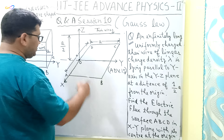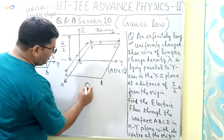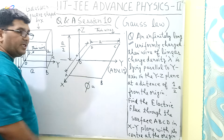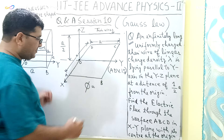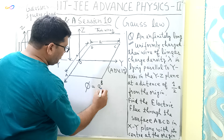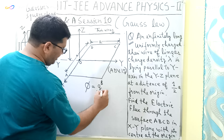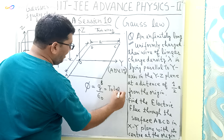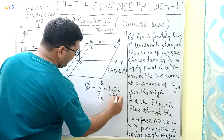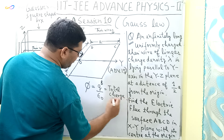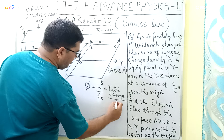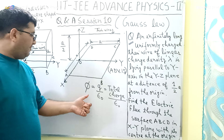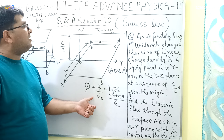In order to find the electric flux through this surface ABCD, I will be using Gauss's Law, which states that the flux through an enclosed surface is equal to Q upon epsilon naught, where Q is the total charge enclosed by that surface and epsilon naught is the permittivity of free space.